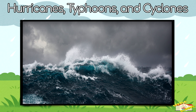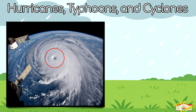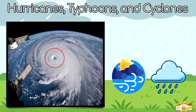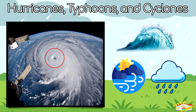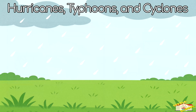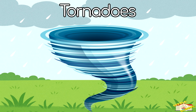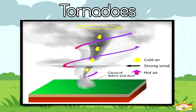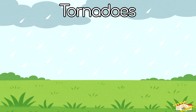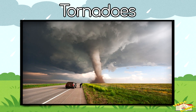Hurricanes, typhoons, and cyclones are huge storms that form over warm oceans. They spin around a low pressure center and bring strong winds, heavy rain, and high waves. Tornadoes form where cold dry air meets warm humid air, causing spinning winds. They are short-lived but very powerful.